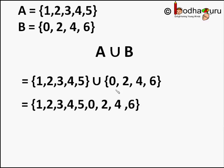So 0, 1, 2, 3, 4, 5 and 6. Look, 2 and 4 are common in both the sets. So when we write A union B we will write them once only, because A union B is a set and all the elements of a set are unique.